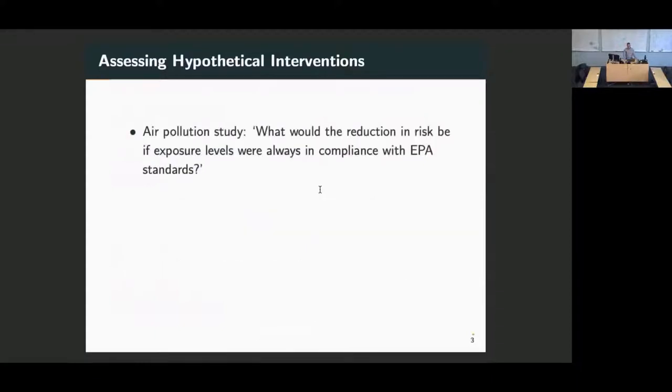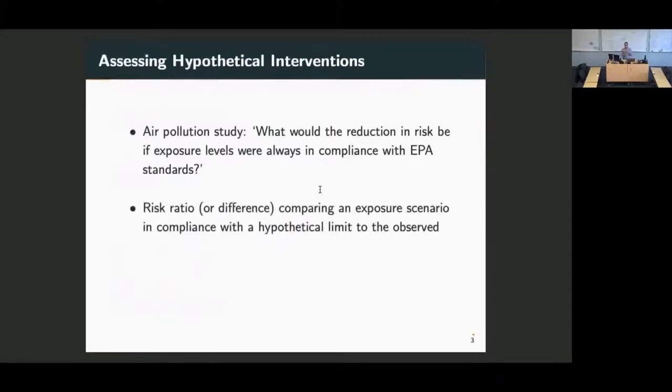If we have an air pollution study and we want to know what the reduction in risk would be if exposure levels were always in compliance with EPA standards, that's a hypothetical because exposures are not always in compliance. The target parameter of interest would be a risk ratio or risk difference comparing the exposure scenario that is in compliance to the observed that is not. And then we would estimate reduction in risk. I say risk here, I mean the actual parameter of risk, so the probability of actually developing the outcome versus not.